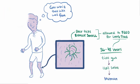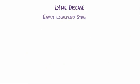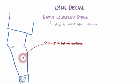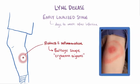If Borrelia infects a human, it causes disease in three stages. The early localized stage of Lyme disease is usually days to weeks after the initial infection. As the bacteria spread from the initial point, redness and inflammation expands. Sometimes the space between the initial bite and the outer radius of the rash is cleared of bacteria, leading to a bullseye-shaped rash, also known as erythema migrans, which is a classic sign of early Lyme disease. There might also be some vague flu-like symptoms at this stage.